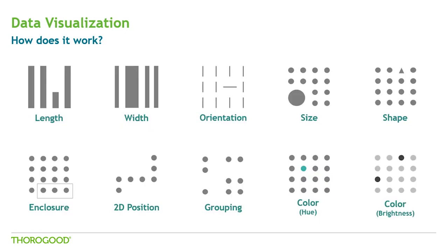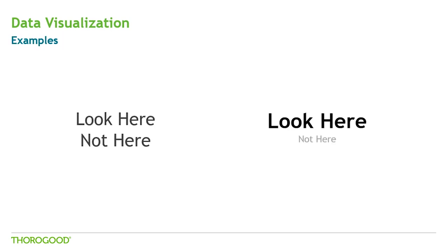These are some of the visual elements that your brain will use to differentiate data points from each other: length, width, orientation, size, shape, enclosure — or having something around a few of the data points — position, which is what you see in the axis of a line chart or a scatter plot, grouping, and color, which you can break down further into things like hue, saturation, brightness, and amounts of red, green and blue. Using those elements I can guide your eyes to look at where I want you to look.